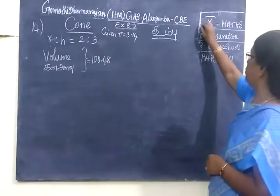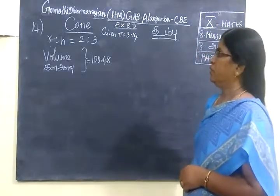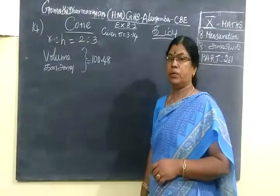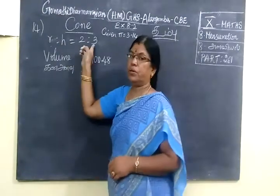Next we keep R to 2:1. Put in question. It is given R is to X equals 2 is to 3. R is to X equals 2 is to 3.